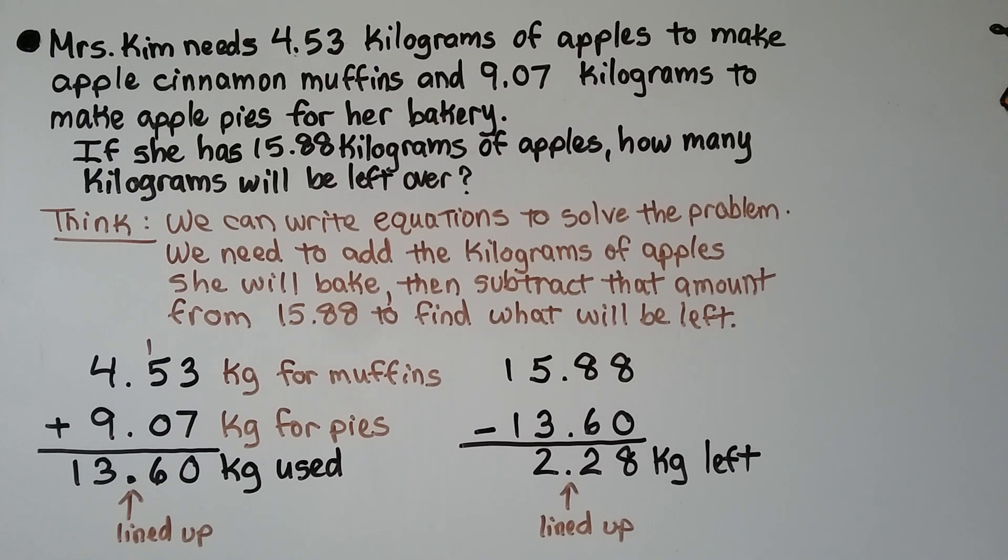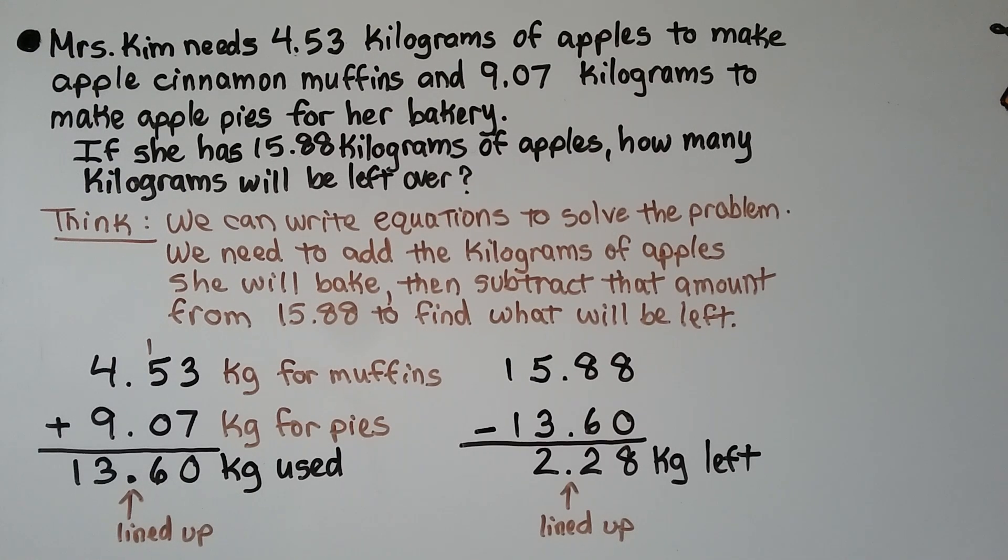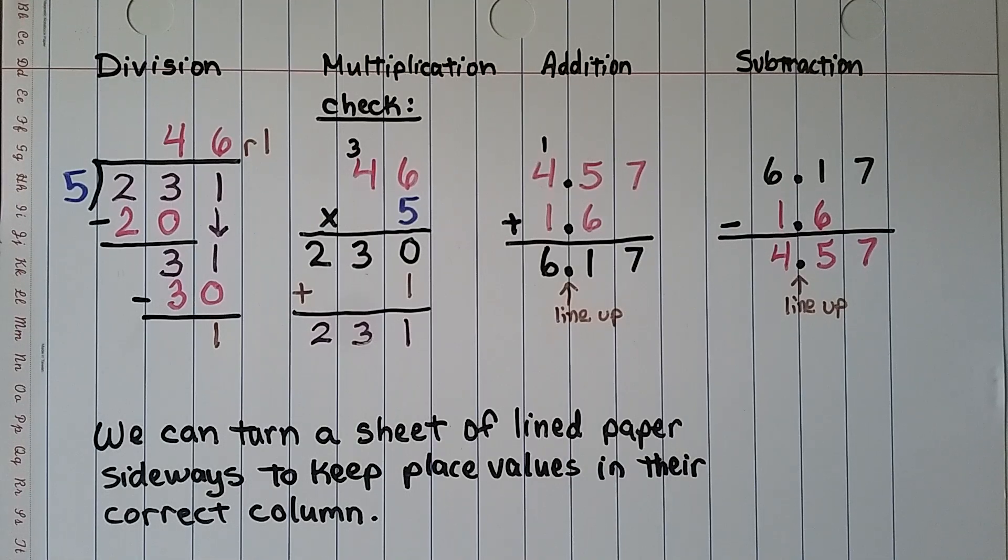And we see that she has 2.28 of kilograms left. We have our decimal points all lined up, and we know how many kilograms of apples she has left over. Since we're looking for kilograms, we have to make sure that we label our answer as kilograms. And don't forget, we can turn a sheet of lined paper sideways to keep our place values in the correct column. It's very helpful with decimals.